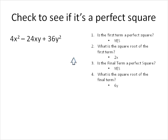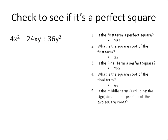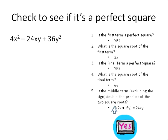Now what we need to do is multiply 2x times 6y, which gives us 12xy. And we double that: 12 doubled is 24xy. If that gives us our middle term, then this is a perfect square. The middle term, excluding the sign, is double the product of the two square roots — that's 2x times 6y, doubled. Is 24xy our middle term? Yes it is. Therefore, it is a perfect square trinomial.